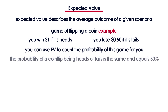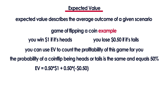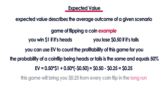Every coin flip has equal probability of being heads or tails. So you calculate the EV by multiplying 0.5, which is the probability of it being heads, by $1, which is the amount your friend is going to give you, and you add to that 0.5, which is the probability of it being tails, multiplied by minus $0.50, which is the amount you're going to have to pay your friend. So that comes to $0.50 minus $0.25, which equals $0.25. So you can expect to win $0.25 out of every single coin flip in the long run.